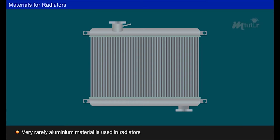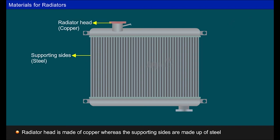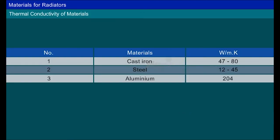Very rarely aluminium material is used in radiators, but this material is very light and is very critical. Sometimes, radiator head is made up of copper whereas the supporting sides will be made of steel. Observe the thermal conductivity of materials like cast iron, steel, and aluminium.